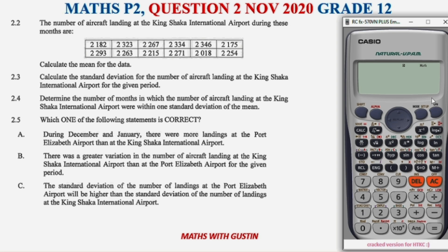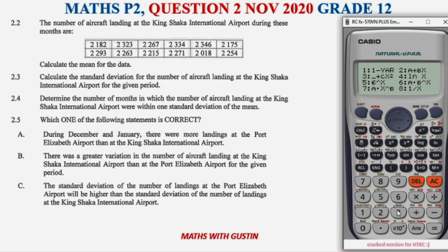Our calculator is here. First, we need to set it to stats mode: go to Mode/Setup, choose option 3 — Stats — then decide whether it's single data or two-variable data. Since we only have one set of data, we choose option 1.